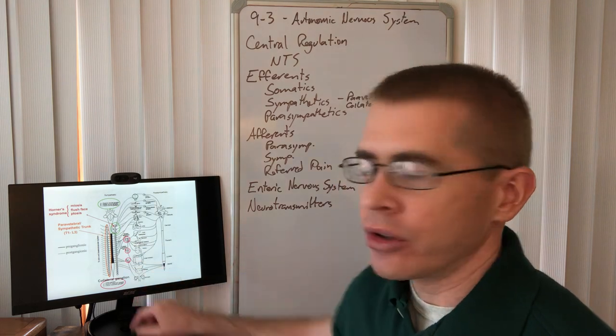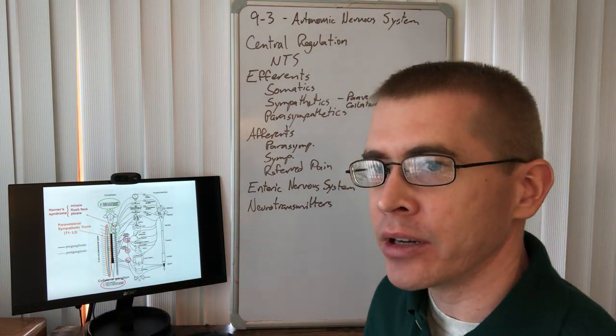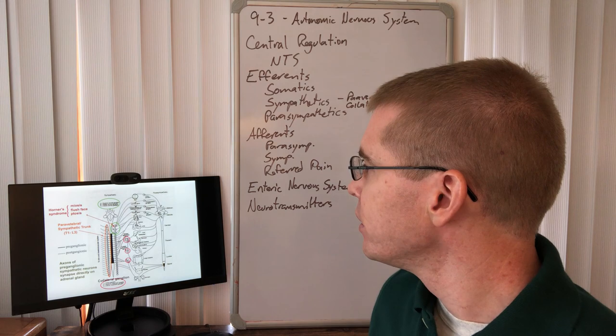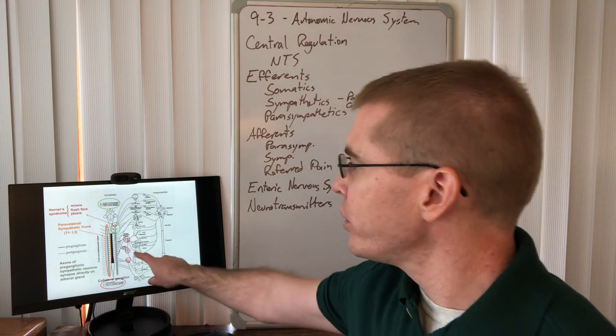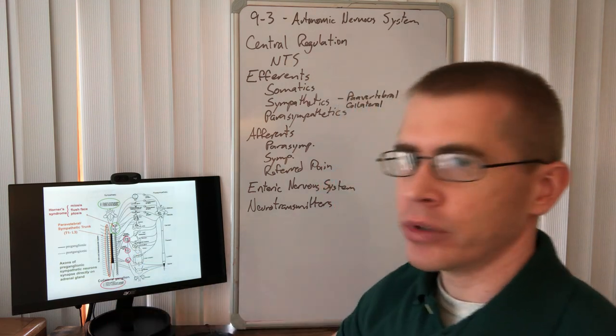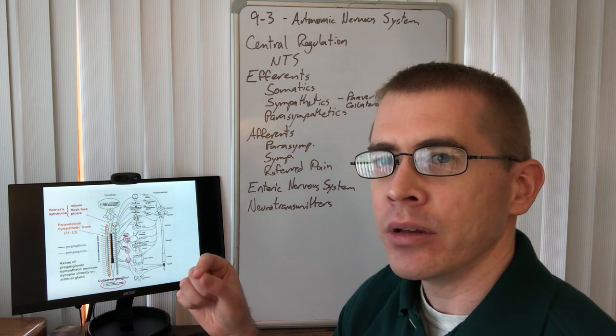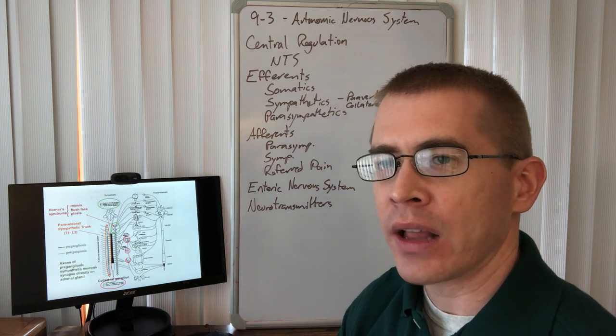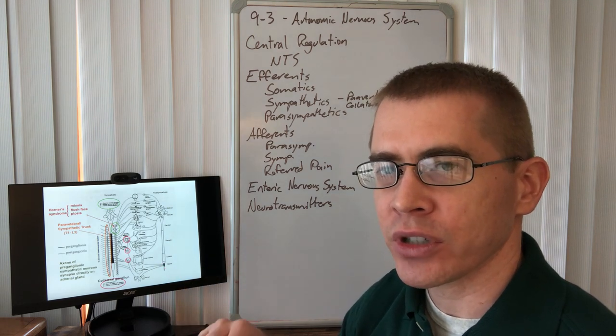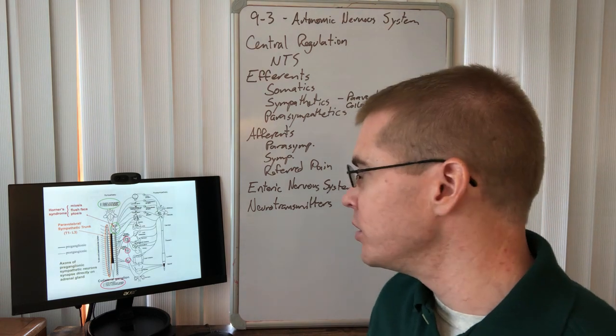And then, so here I'm now highlighting those collateral ganglia. I've got an animation on the silly slide. So one thing to note here is that the adrenal gland doesn't have a post-ganglionic fiber. It is directly innervated by pre-ganglionic fibers. That's another little exception to these rules.